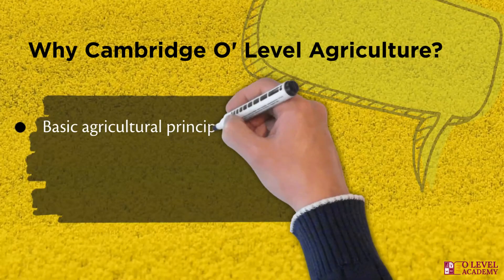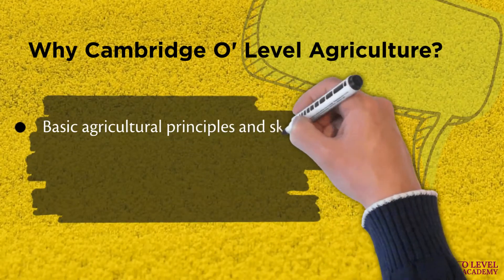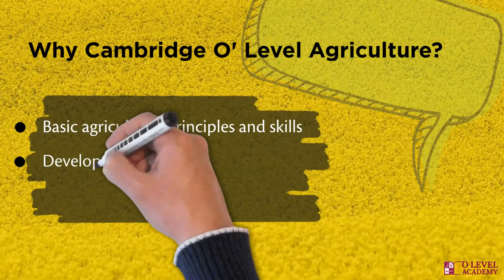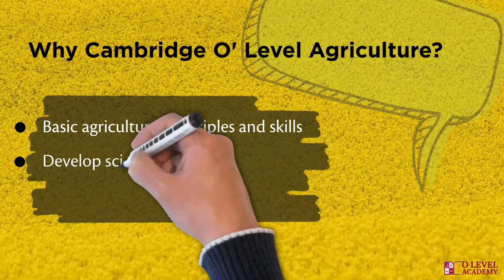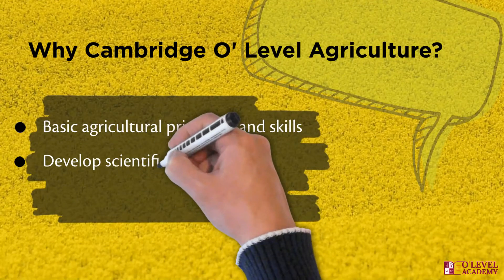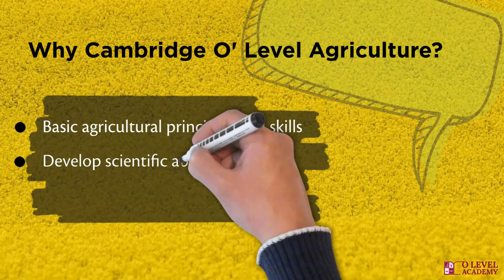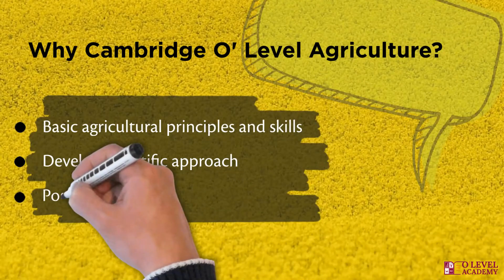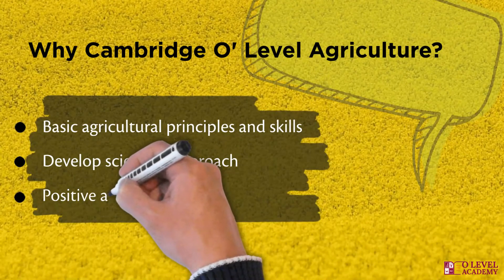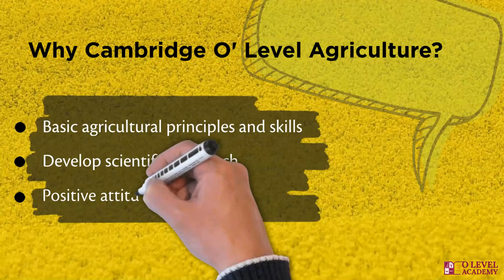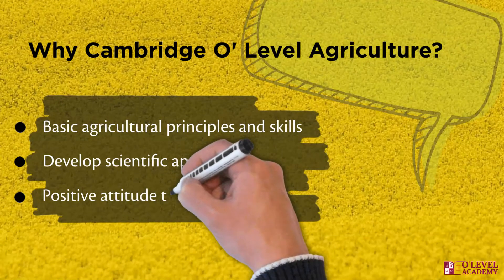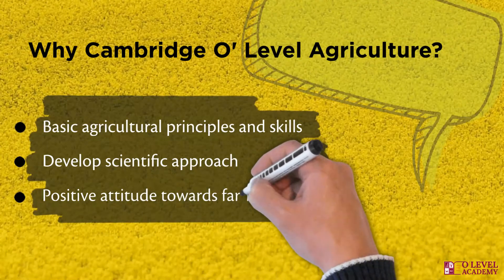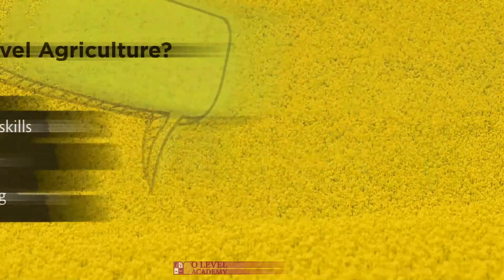Various topics of the syllabus help students to enhance their abilities to apply scientific approaches in practical life in various fields like crops and livestock, farm structure, farm machinery, etc. After studying this, students gain a positive attitude toward agriculture and farming and can use their knowledge to reduce different issues in malnutrition.